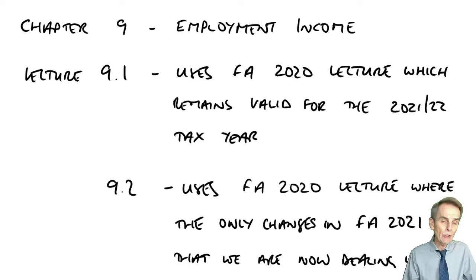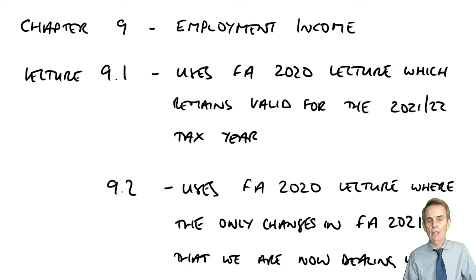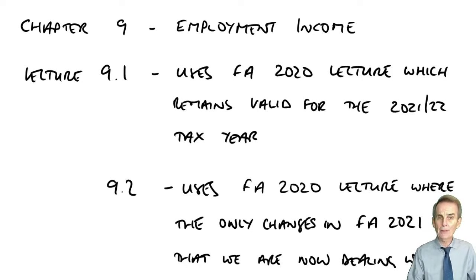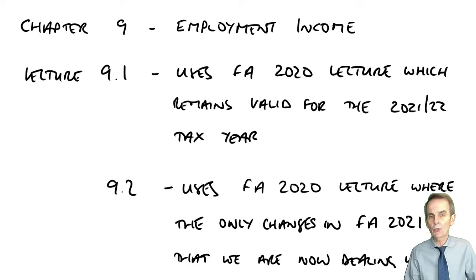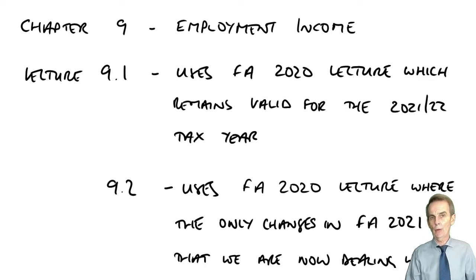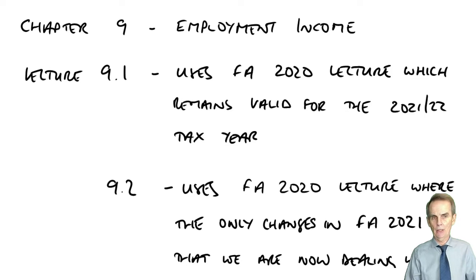What we now turn our attention to here in Chapter 9 is looking not at the self-employed, but the employed. We're looking at employment income here. As it was with the unincorporated trader, much of what we need to know for the 21-22 tax year, here under Finance Act 21, has not changed since earlier years.